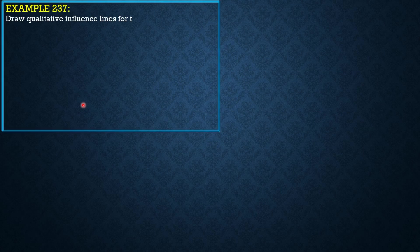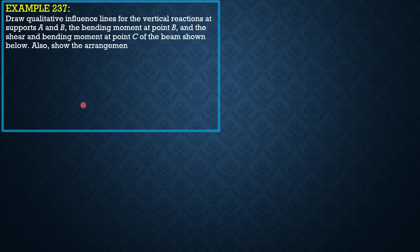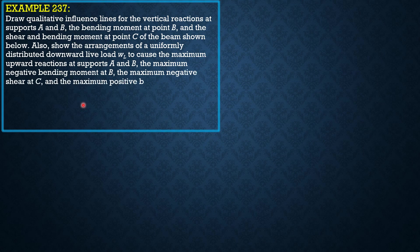Here is the problem. Draw qualitative influence lines for the vertical reactions at supports A and B, the bending moment at point B, and the shear and bending moment at point C of the beam shown below. Also show the arrangements of a uniformly distributed downward live load WL to cause the maximum upward reactions at supports A and B, the maximum negative bending moment at point B, the maximum negative shear at point C, and the maximum positive bending moment at point C.